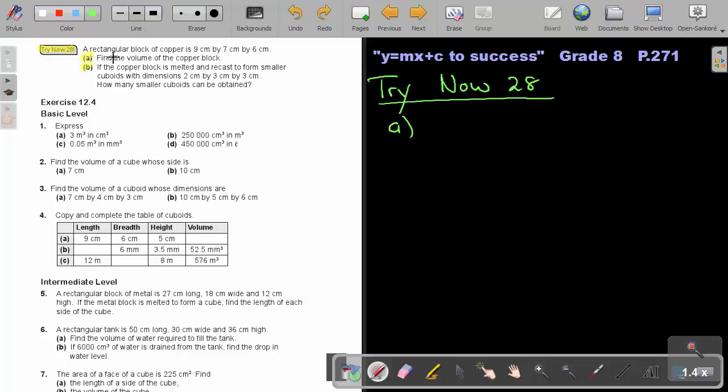So again, a rectangular block of copper is 9 by 7 by 6. Find the volume. So that is a cuboid.